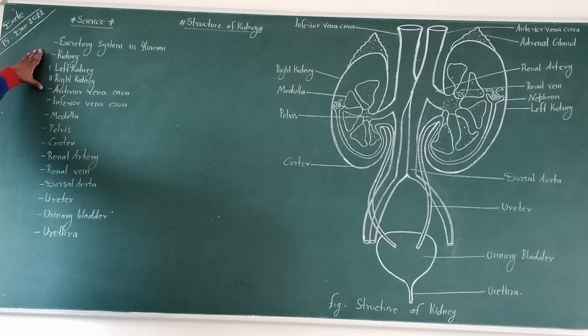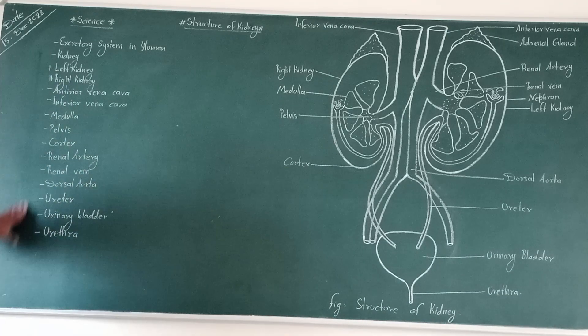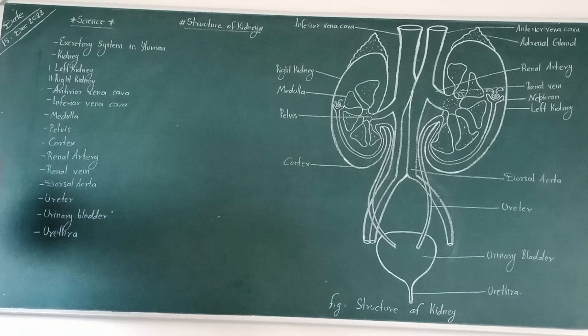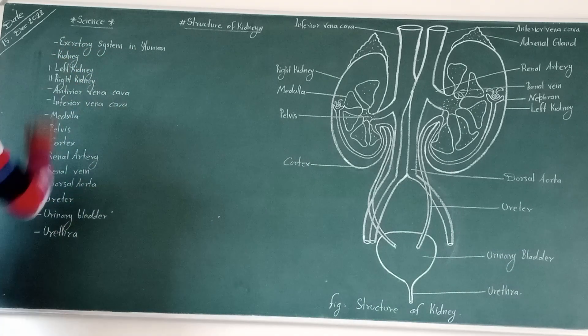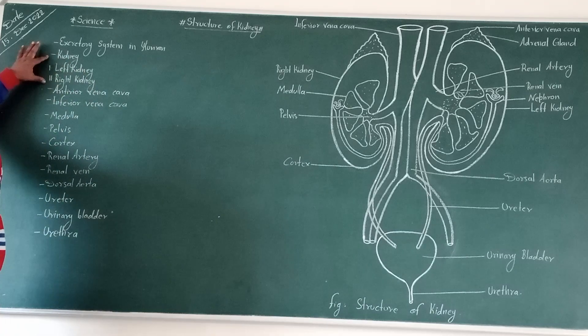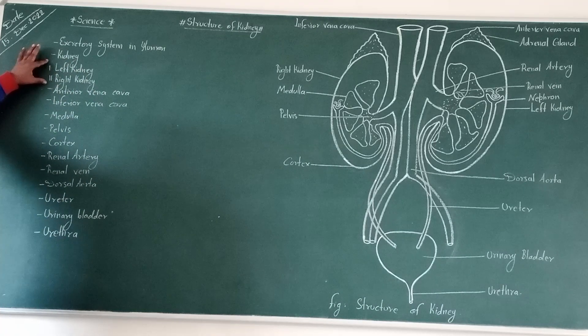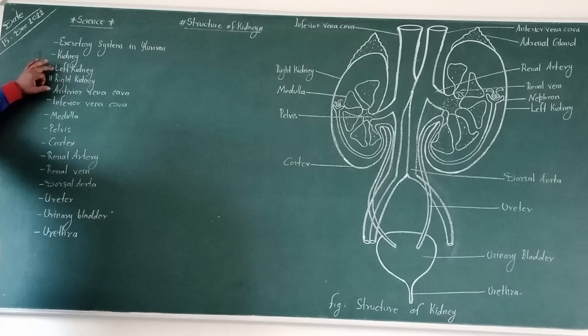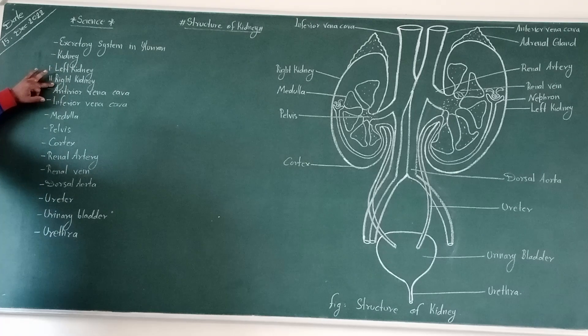These are three special topics that will be related to reference of excretory systems in humans, such as kidney. Kidneys are divided into basically two, one group, and it is also divided into part first of the left kidney, and then second, right kidney.